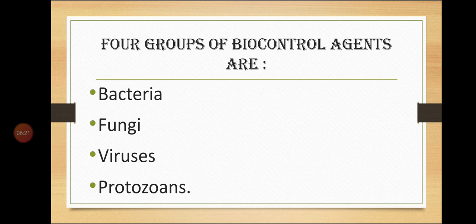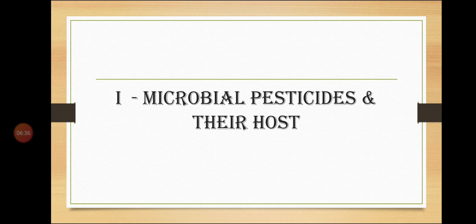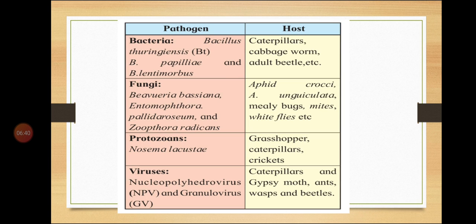There are four groups of biocontrol agents: bacteria, fungi, viruses, and protozoans. We will now study microbial pesticides and their hosts, as depicted in the following correlation.